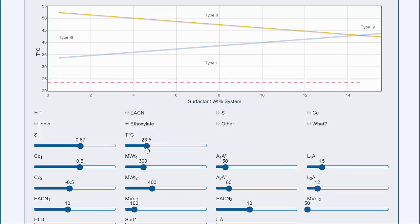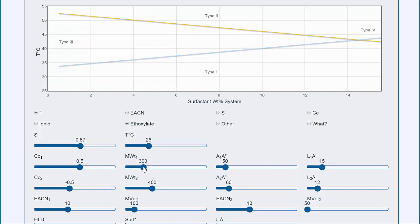The surfactant has a molecular weight. And what it's telling us is that with this particular set of conditions, at low temperature you're on type 1 domain. Then you go into the type 3 domain at intermediate temperature, and then at higher temperatures you're in type 2.